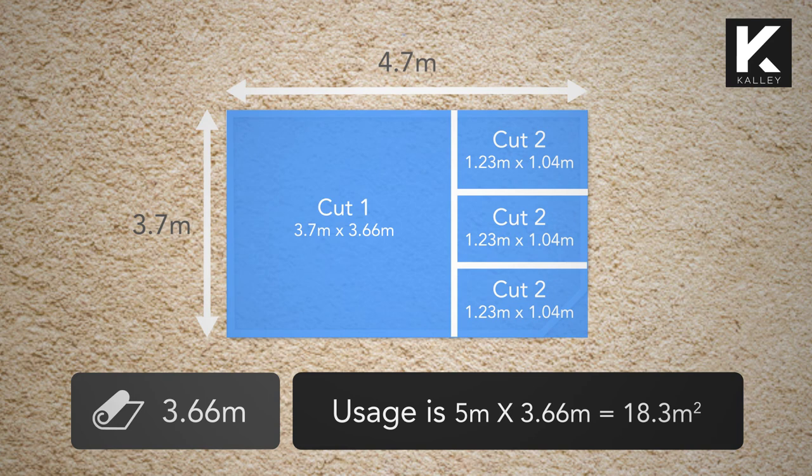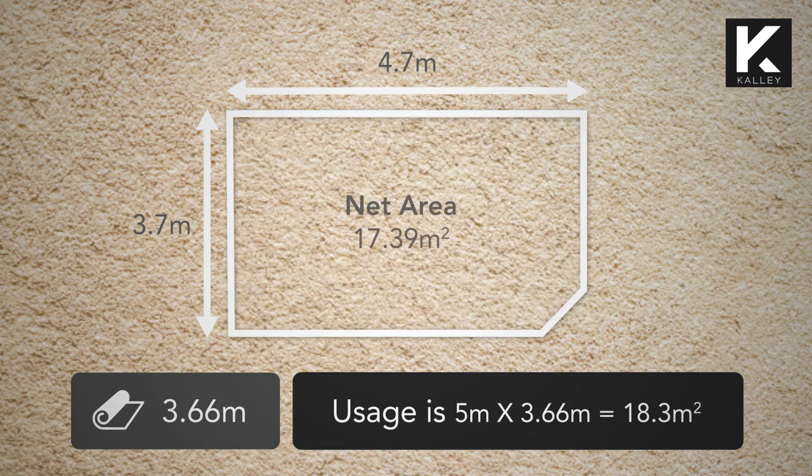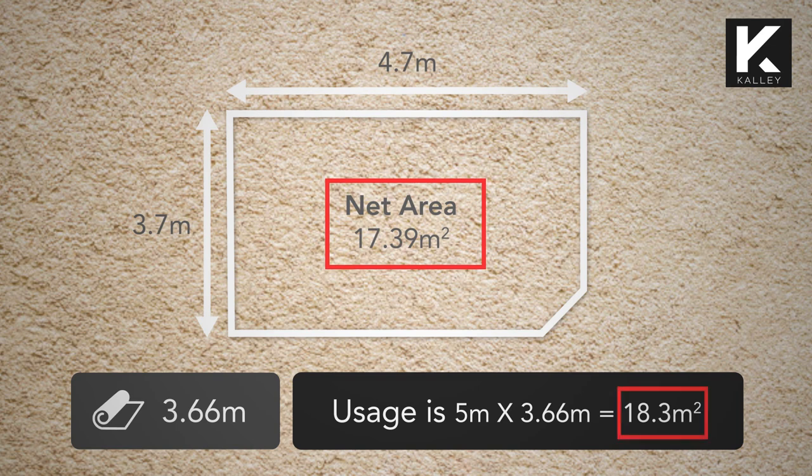Let's confirm if this is greater than the net area above. The usage is greater than your net area, so you will be purchasing 18.3 metres squared or 5 lineal metres of carpet.